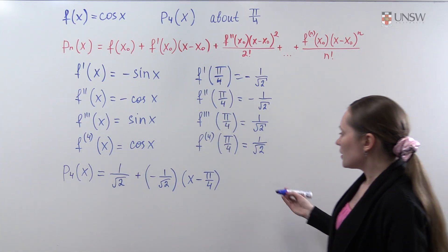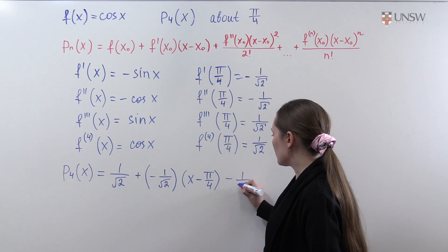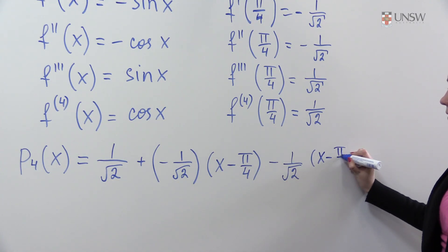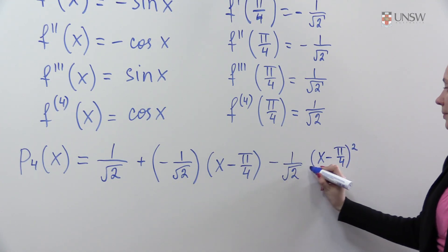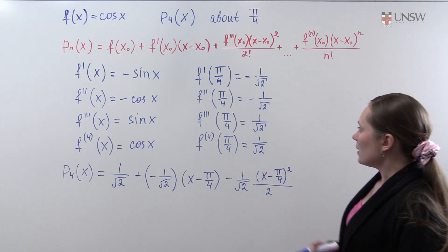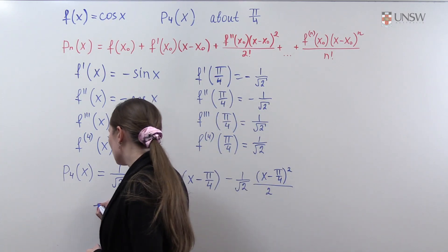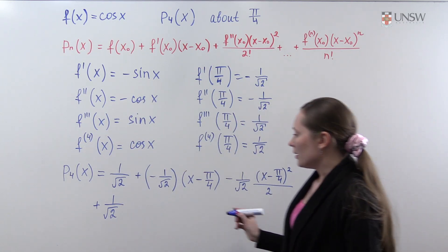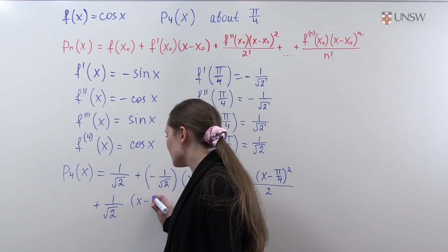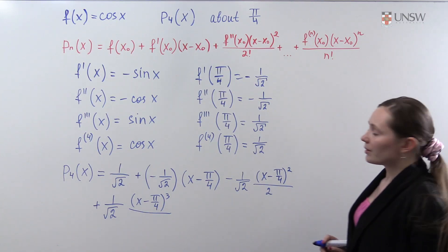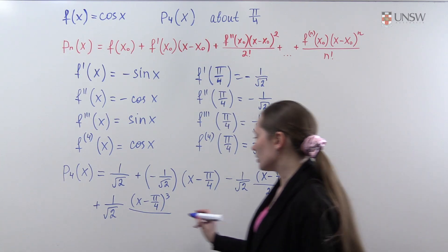The second derivative is minus 1 over square root of 2, giving us (x minus pi over 4) squared over 2 factorial, which is just 2. Then we substitute the third derivative, 1 over square root of 2, giving (x minus pi over 4) to the power 3 over 3 factorial, which is 6.